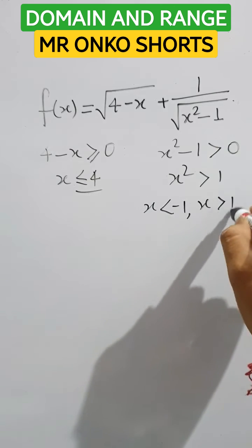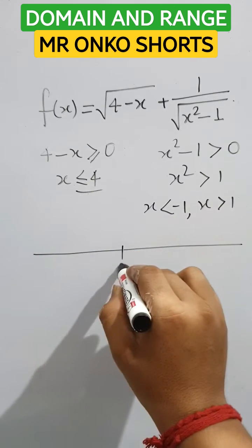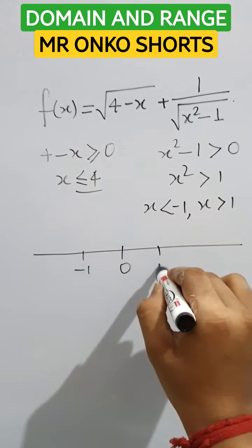So x less than minus 1 and x greater than 1. Now if we draw a number line, that is minus 1, 1, 2,